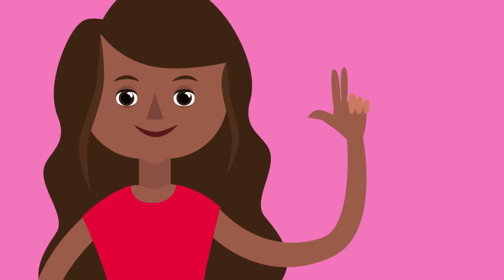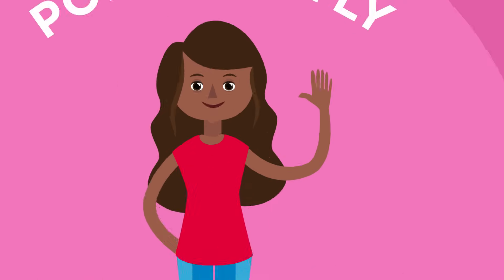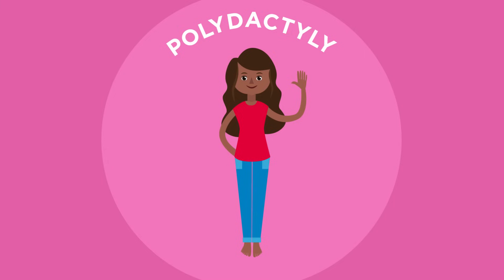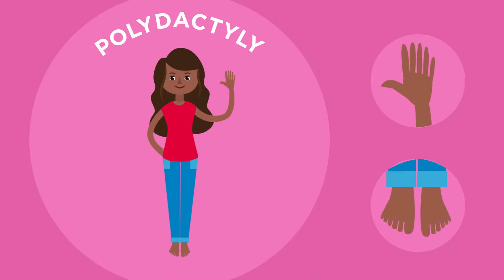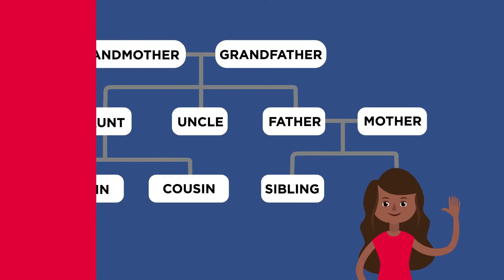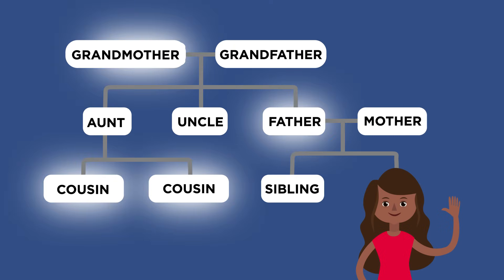This girl has six fingers on her left hand. She has a condition called polydactyly which causes extra fingers or toes. Her father and grandmother as well as some of her cousins also have the condition. This should give you a clue about how she came to have it. Any ideas?